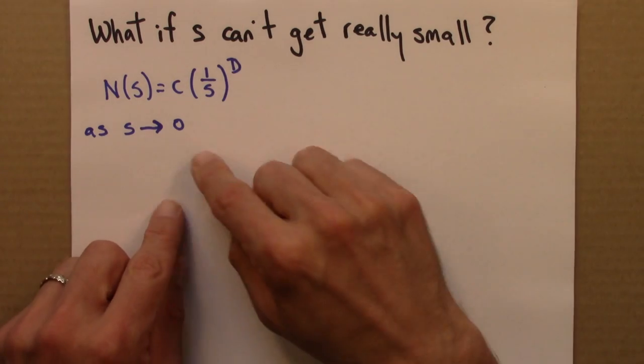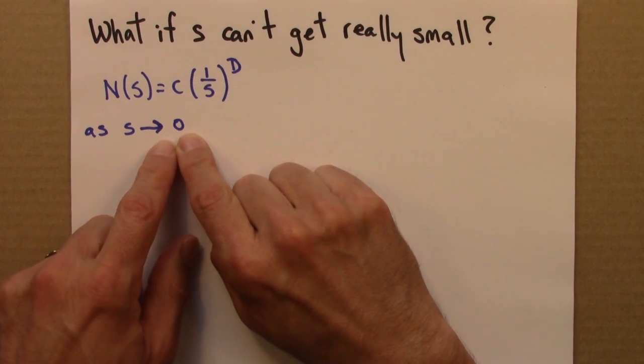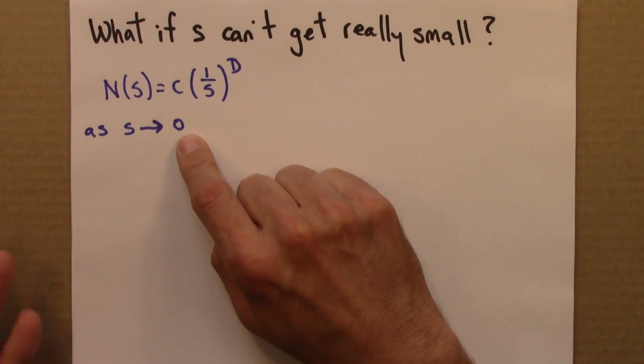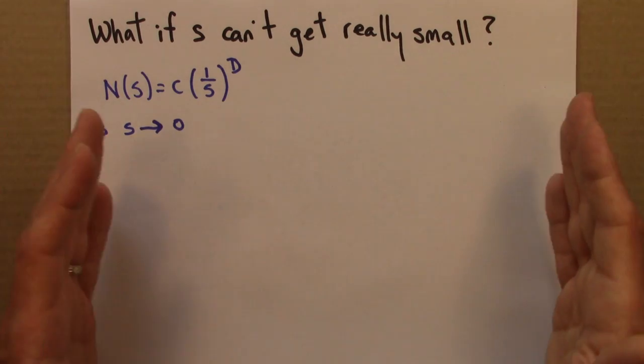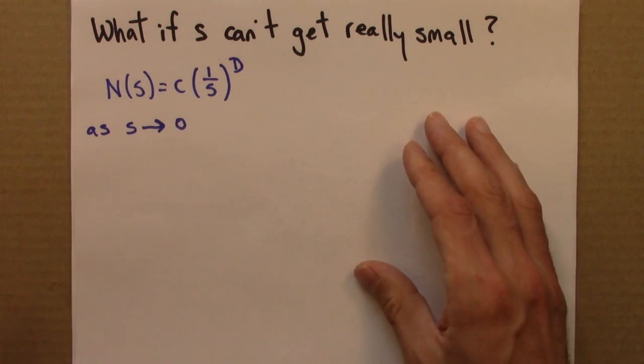So what this means is we can't push this limit as s goes to zero infinitely far, both because it requires too much computing memory, and because real fractals don't scale forever. They're fractals only over a range of length scales.